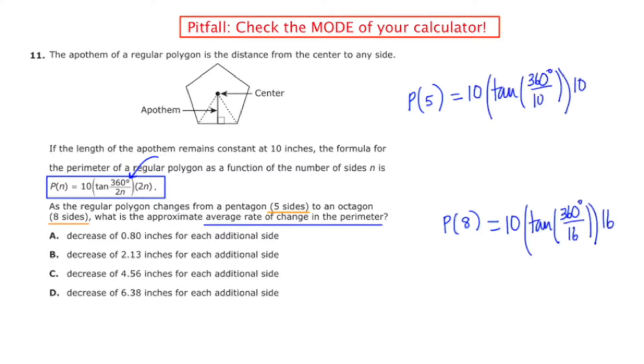Okay, so I have my two functions set up respectively, first plugging in 5 and then plugging in 8. And now I'm going to get the calculator and actually evaluate, making sure that I'm in degree mode.